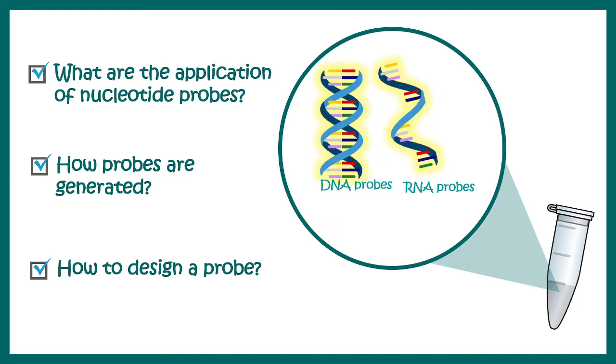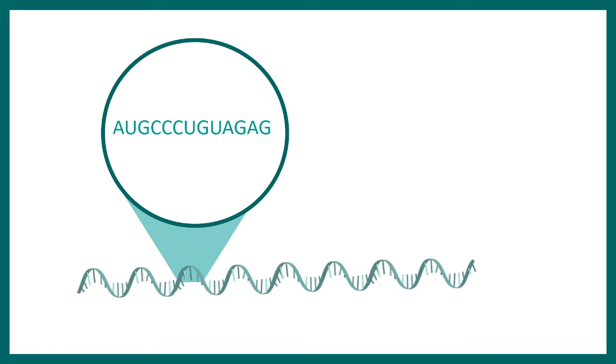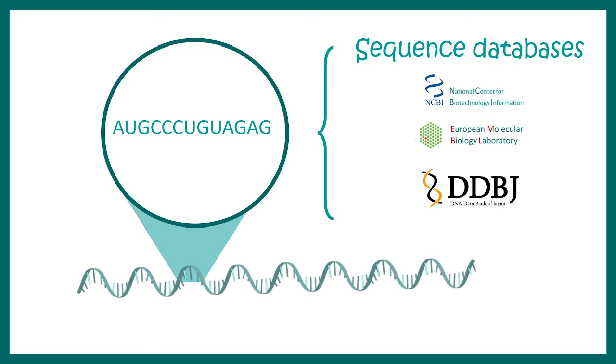Now let's understand how to generate a probe or how to design a probe. So this is an mRNA of interest that we want to detect using a nucleotide probe. First and foremost, we need to have sequence information that we want to detect. The sequence information can be obtained via several sequence repositories such as NCBI, EMBL, or DDBJ.